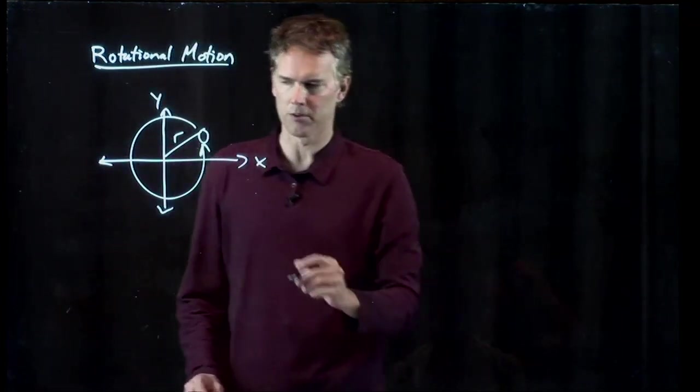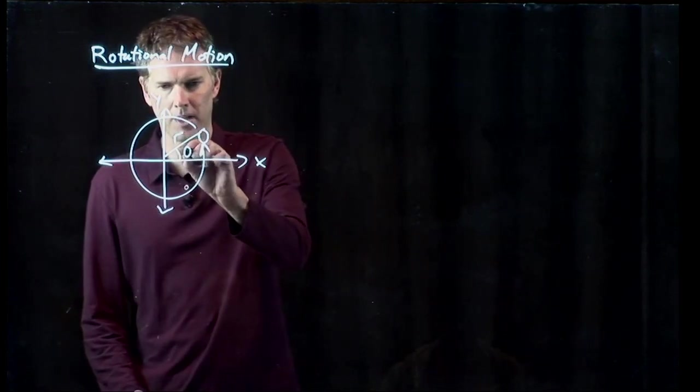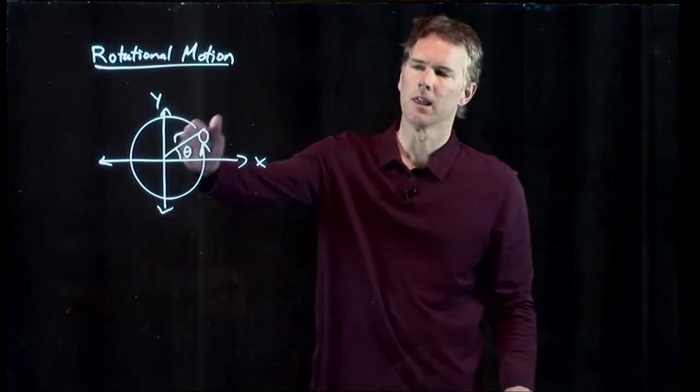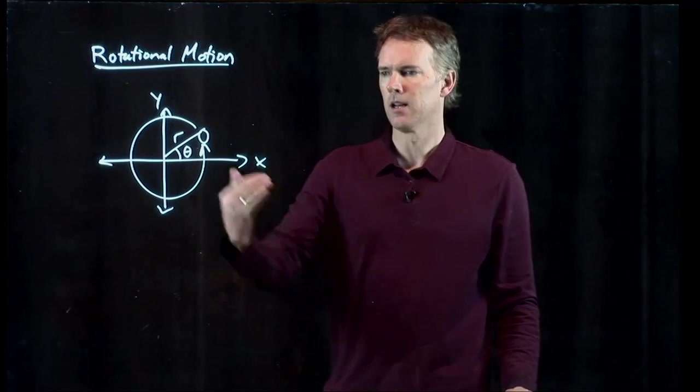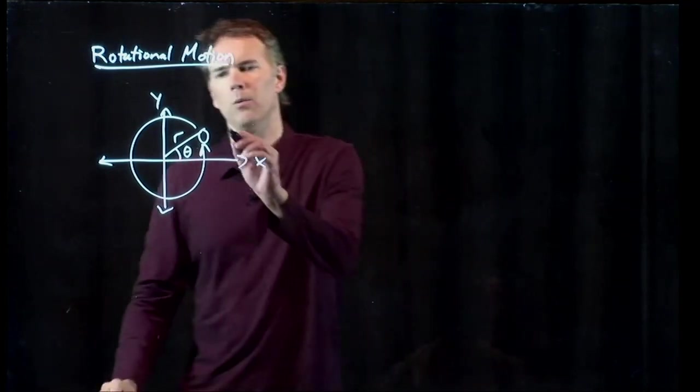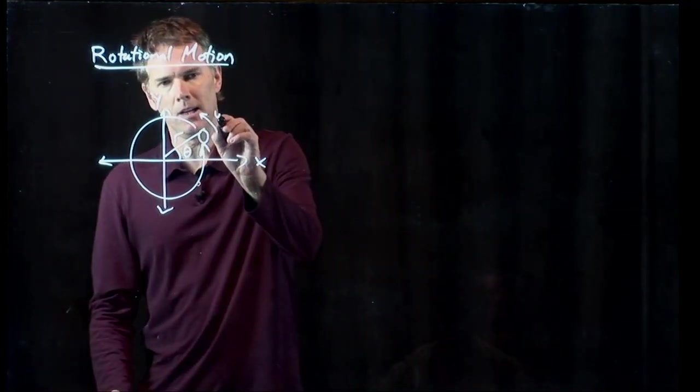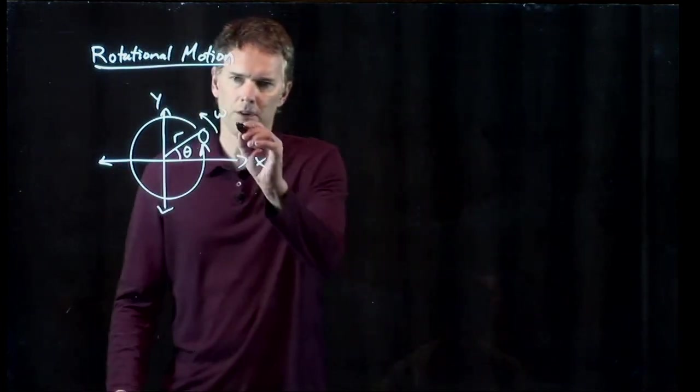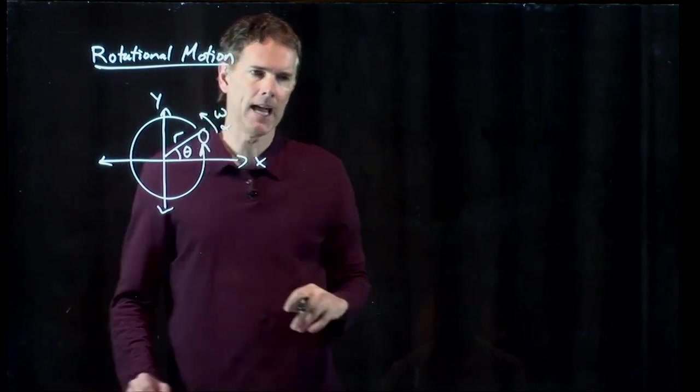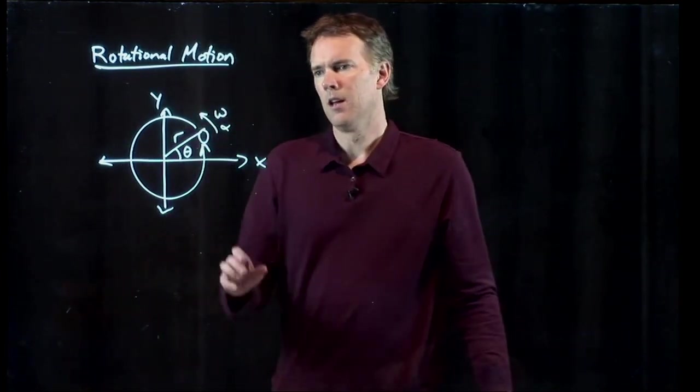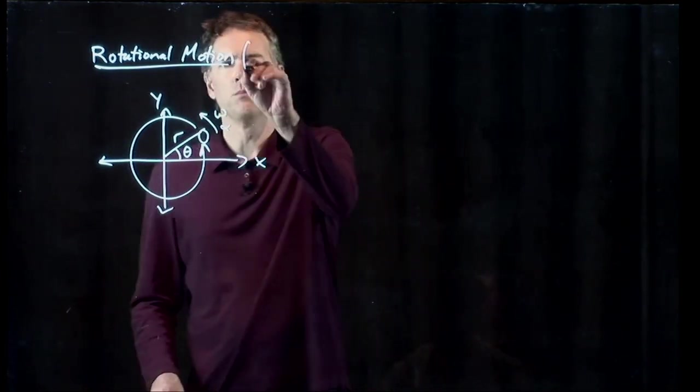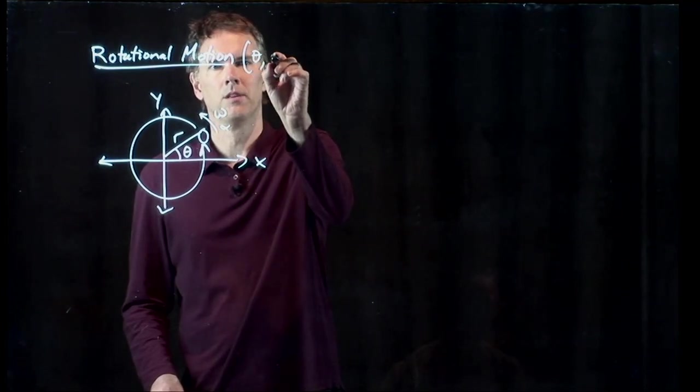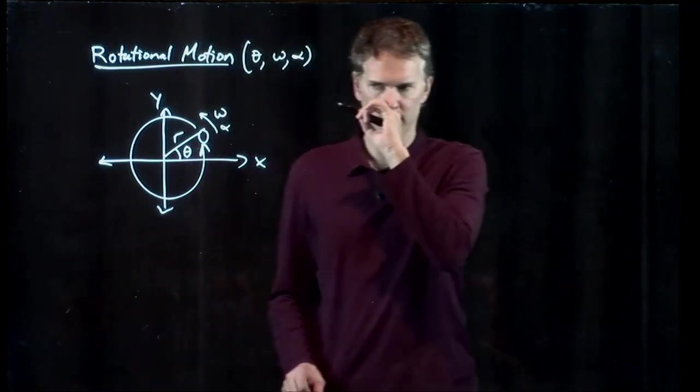The radius r of the circle, the angle theta between the line to the object and the x axis. We can also talk about the angular speed of the object omega, and we can also talk about alpha, the angular acceleration. These are the important variables: theta, omega, and alpha.